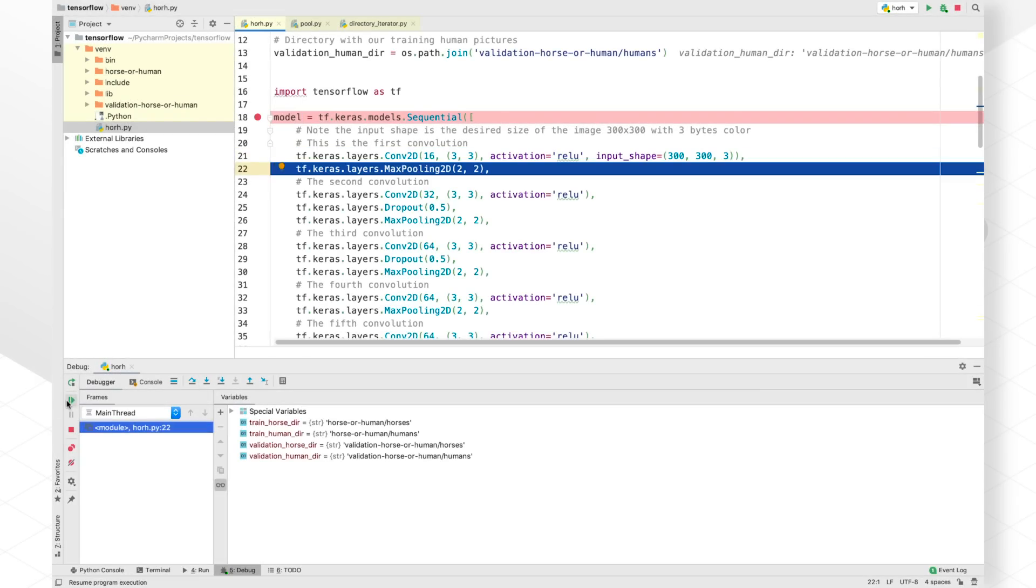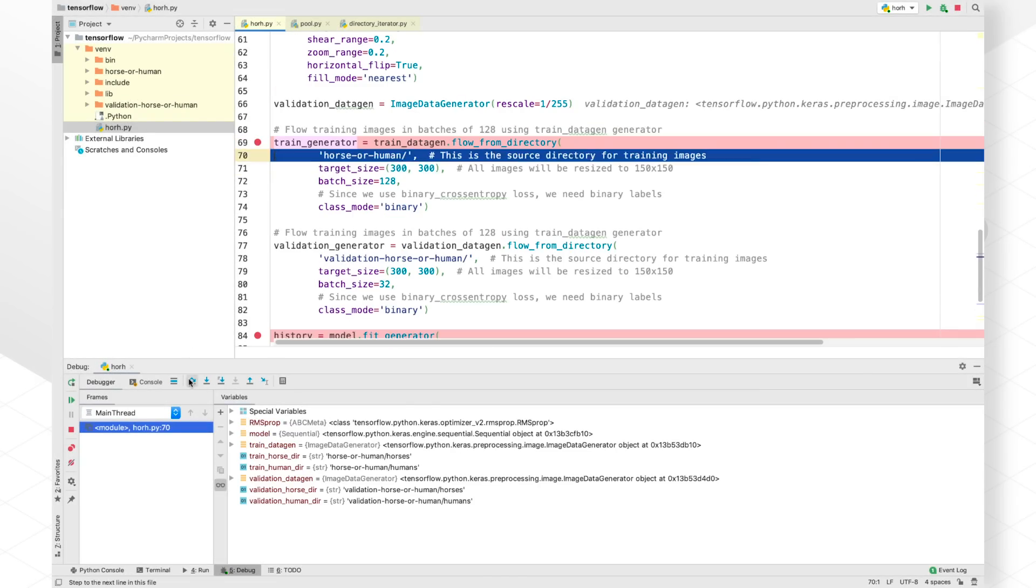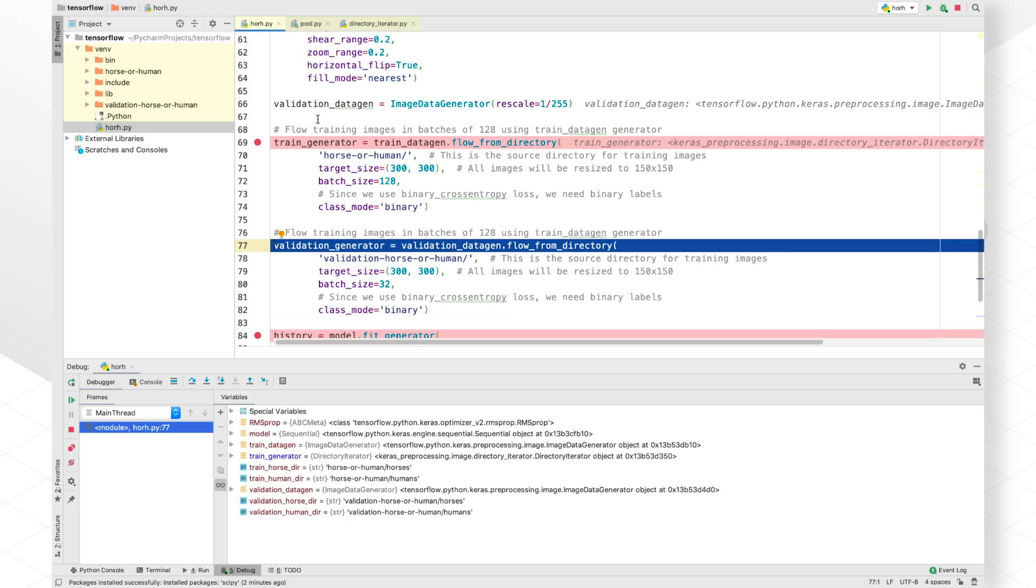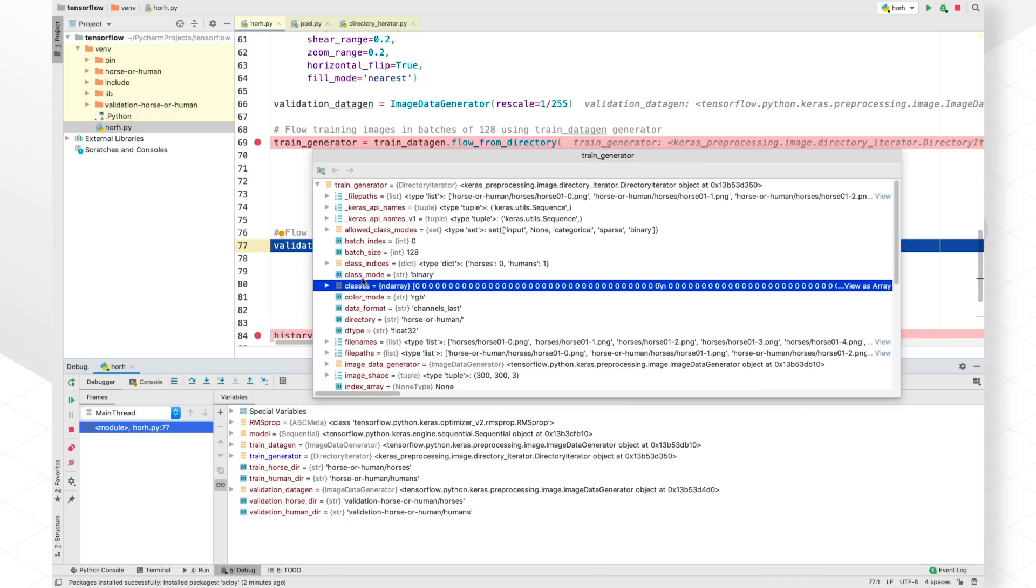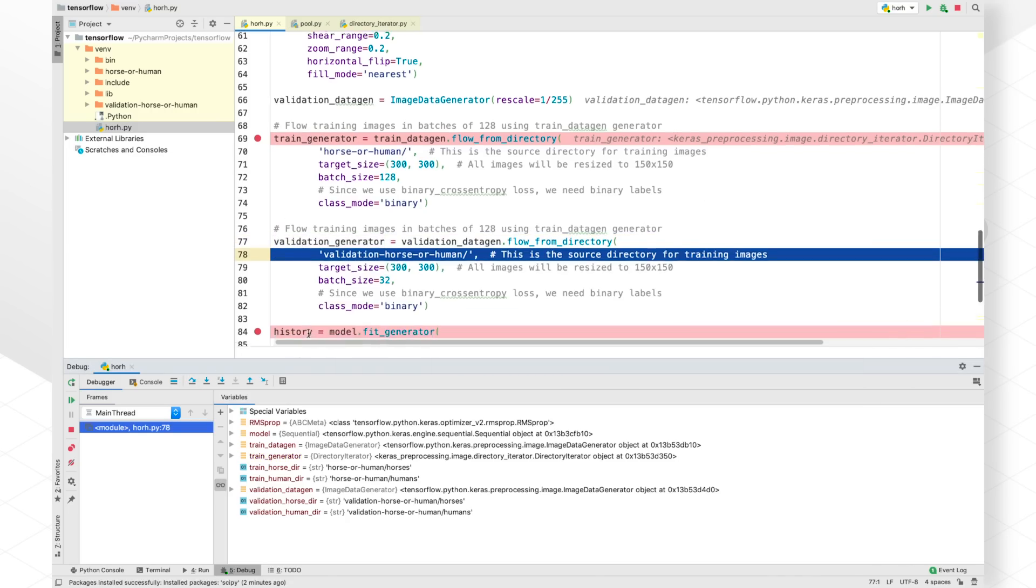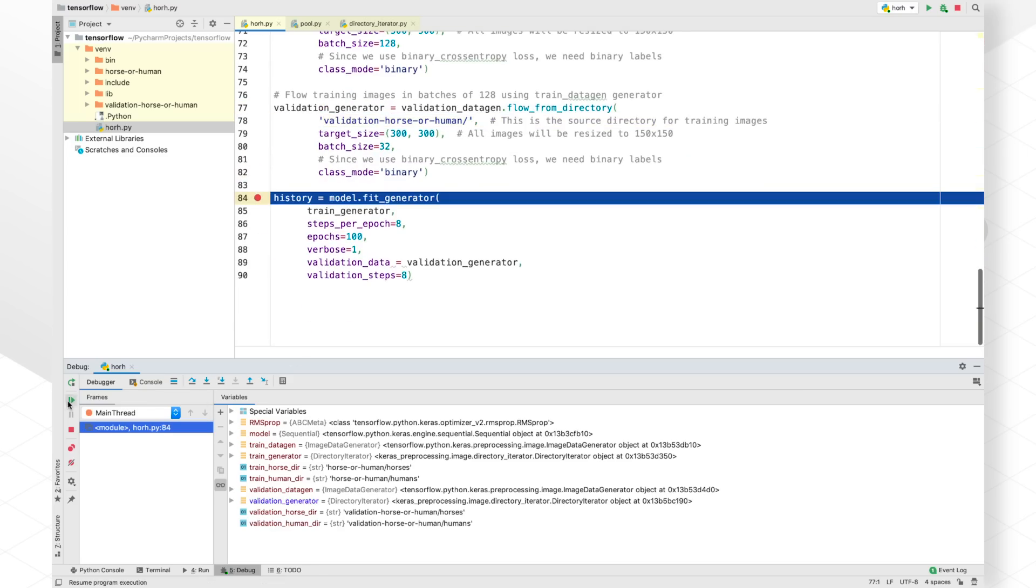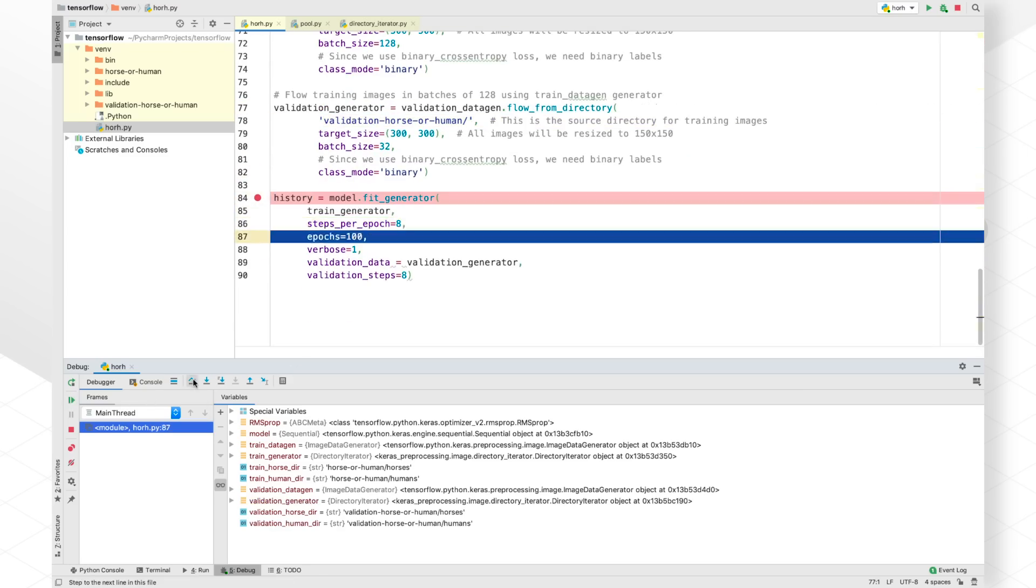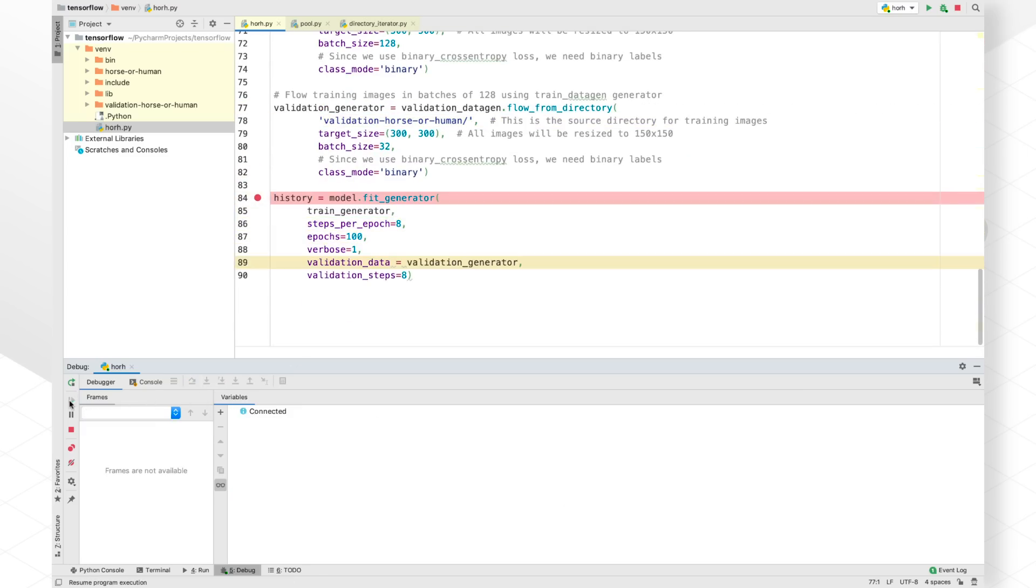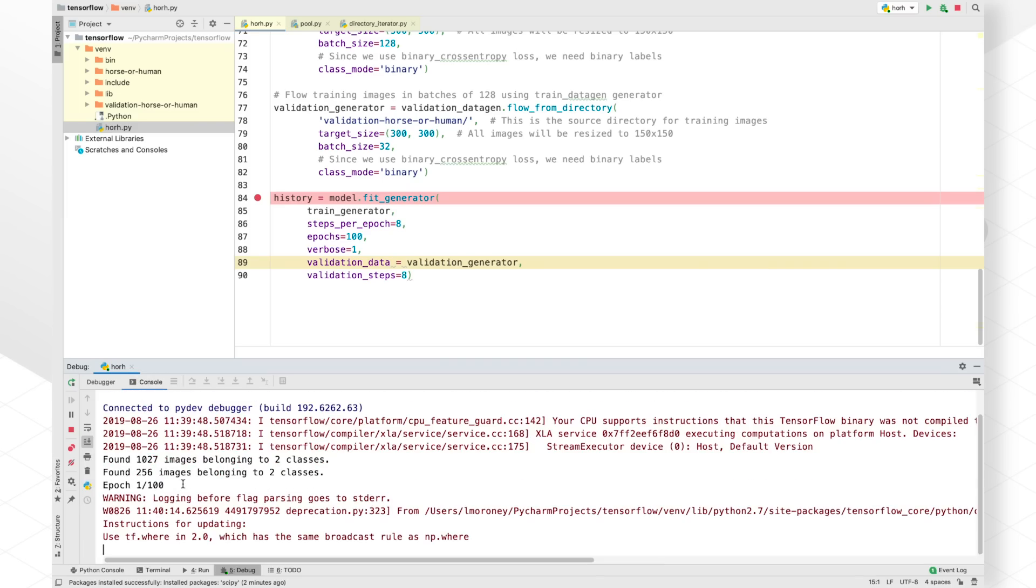With TensorFlow 2.0, we strive to make development of machine learned applications much easier. With tight integration of Keras into TensorFlow, eager execution by default, and an emphasis on Pythonic function execution instead of sessions, the goal is to make the experience of developing applications with TensorFlow 2.0 as familiar as possible for Python developers.